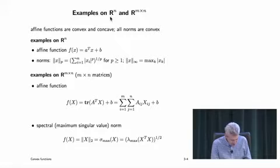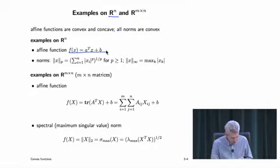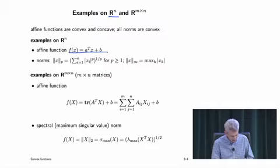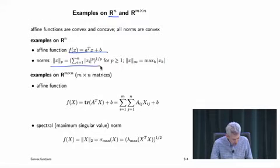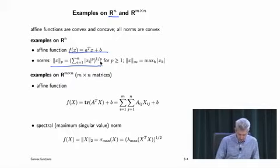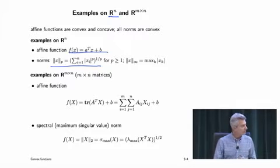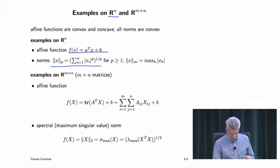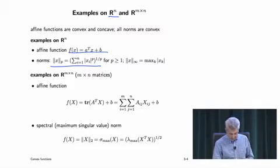Let's look at some functions on R^n. A general affine function is both convex and concave. A norm — so any norm is convex: the 1-norm, the 2-norm, infinity norm, 3-norm — any norm is convex.